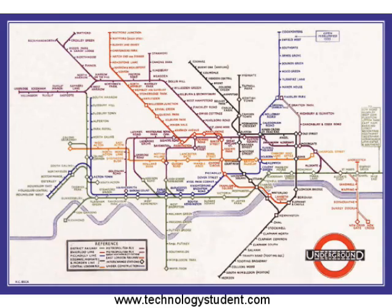Beck's map differed from those that had come before it. Beck realized that the distance between stations was not important, as passengers were most interested in the order of the stations and how they connected to each other. This is seen particularly in the busy central area of the map, which he expanded to show more detail. The stations on the periphery of the geographical map are drawn closer to the center, which allowed the map to be produced to a manageable overall size.